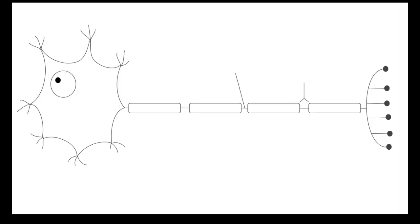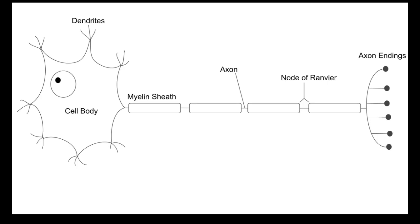So this is what a neuron looks like — we've drawn it in class. I'm just going to quickly label it so we remember the parts. We have our dendrites, the cell body, we have the myelin sheath that wraps around the axon, and in between the myelin sheath we have nodes of Ranvier, and then we have the axon endings.